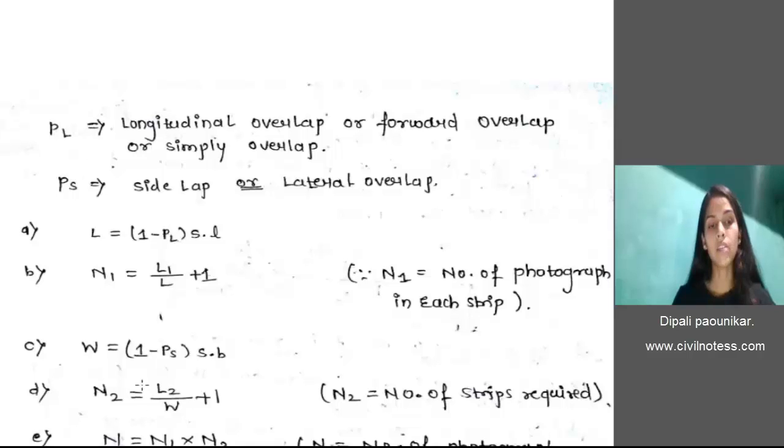Now, fourth one is N2 equals L2 upon W plus 1. N2 denotes the number of strips required.